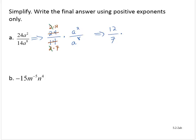I have a to the second divided by a to the eighth. Using the quotient rule for exponents, that would be a to the 2 minus 8. Well, 2 minus 8 is negative 6. It says write the final answer using positive exponents only. A to the negative 6, as we saw in a previous example, can be thought of as 1 over a to the sixth.